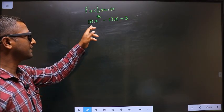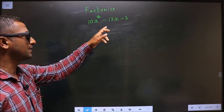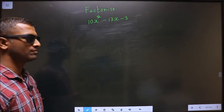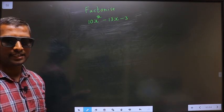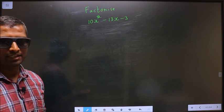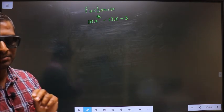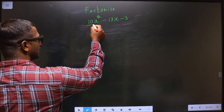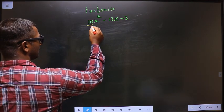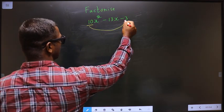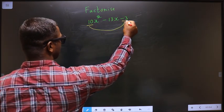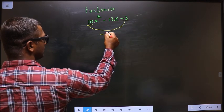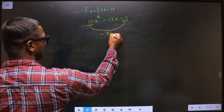Factorize 10x squared minus 13x minus 3. To factorize any quadratic equation, Step 1: whatever x squared coefficient you have, you should multiply it to the constant, which is minus 3 here. So 10 into minus 3 is minus 30.